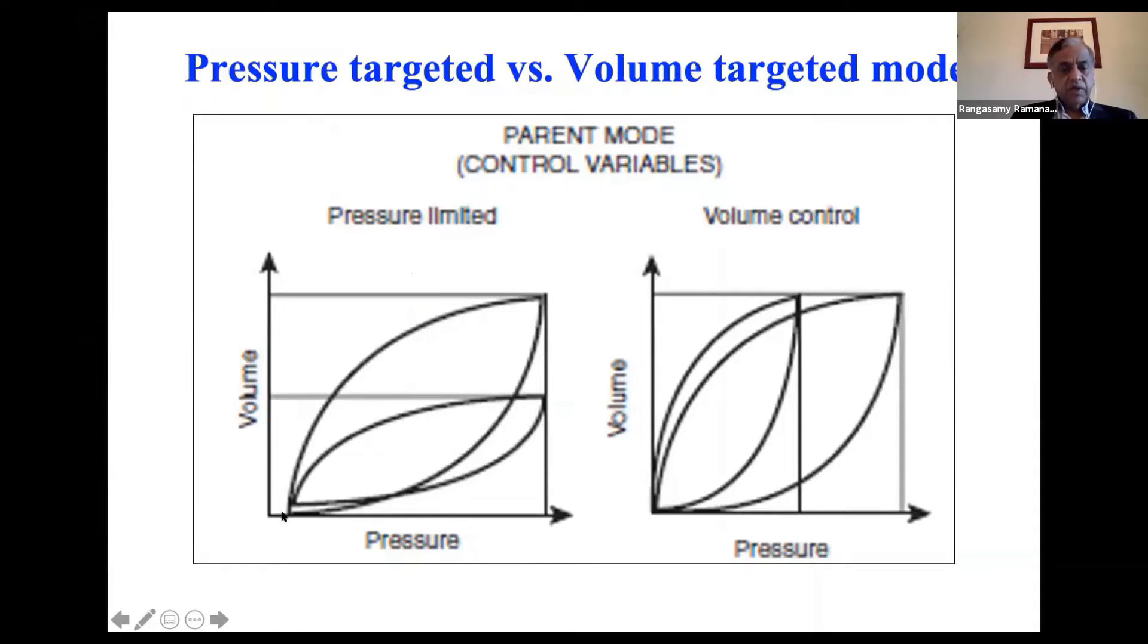Here is the pressure volume curve on a baby with bad or severe RDS. The pressure increases, the volume doesn't go up. But if you use a factor, for example, compliance improves, same pressure, you deliver a lot more tidal volume.